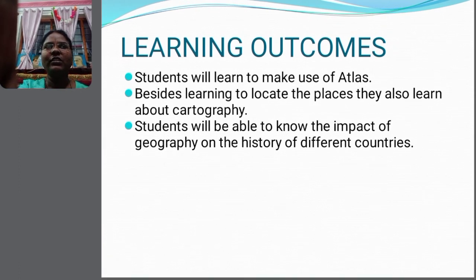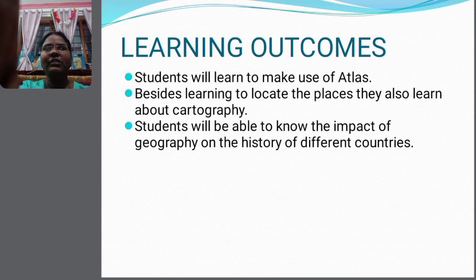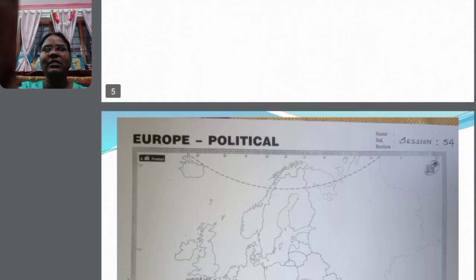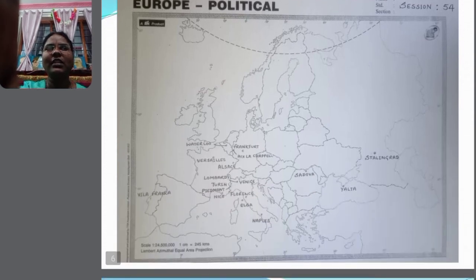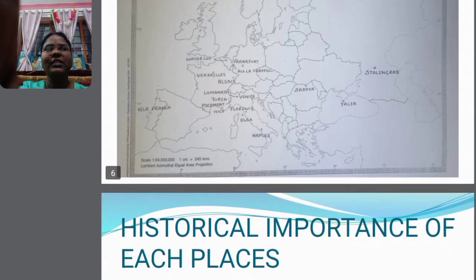At the end of the session, students will learn to make use of an atlas. Besides learning to locate places, they will also learn about cartography — the art of map making. Students will be able to know the impact of geography on the history of different countries. Now we can observe the different countries and their capital cities marked on the outline map of Europe.